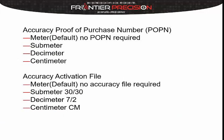Before we get started, let's talk about the accuracy levels on the TDC 150. There are four different options. The meter level is the default setting on the unit and doesn't require any activation file — it's just how it's set up. The other three options — sub-meter, decimeter, and centimeter — are all purchased options that come with a pop-in and require activating an accuracy file within the GNSS Loader and the Space app.